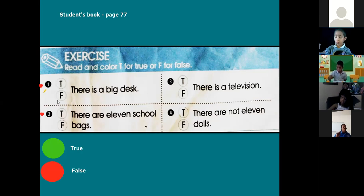Number three: there is a television. There is a television. True or false? I'm gonna repeat it one more time, this reading. Hi, I'm Sandy. This is my room. There is a big desk and there is a chair. There is a new television. There are eleven dolls and three school bags. I have a big room and I am very happy. Number four and last.